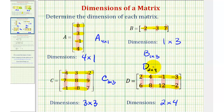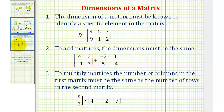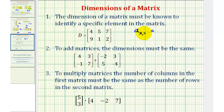I do want to end with a couple of reasons why knowing the dimensions of a matrix is so important. As we already briefly discussed, the dimensions of a matrix must be known to identify a specific element in a matrix. For example, if we wanted to identify the element in row two, column one, we have to understand that means we're looking for the element in row two, column one. So a sub two comma one would be equal to nine.